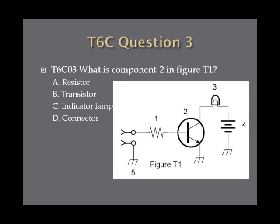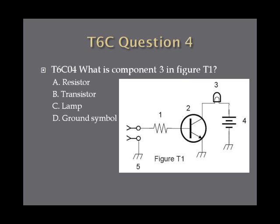Question 3: What is component 2 in figure T1? A. Resistor. B. Transistor. C. Indicator lamp. Or D. Connector. Question 4: What is component 3 in figure T1? A. Resistor. B. Transistor. C. Lamp. Or D. Ground symbol.